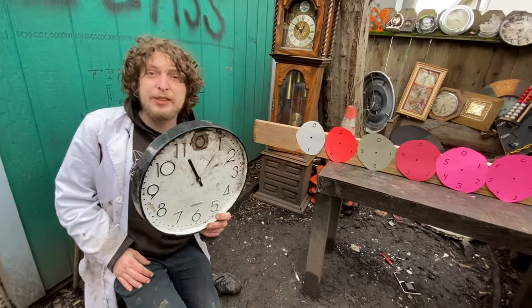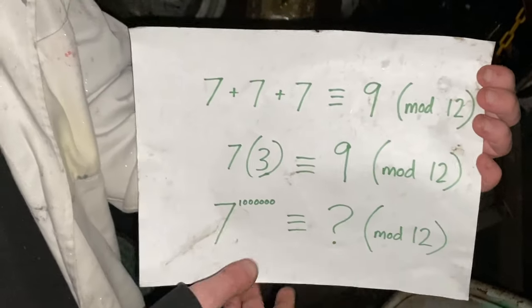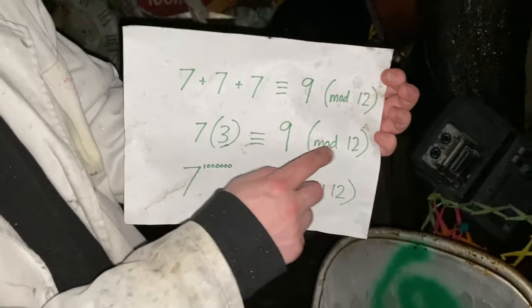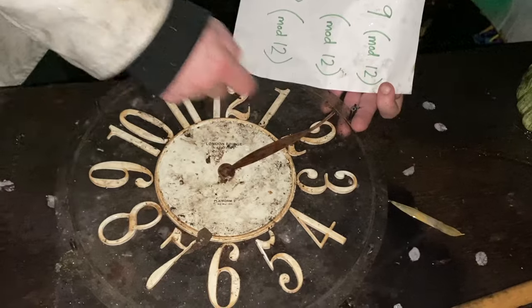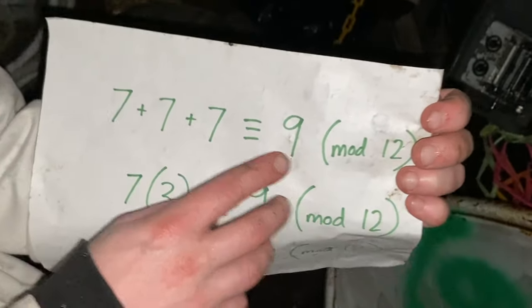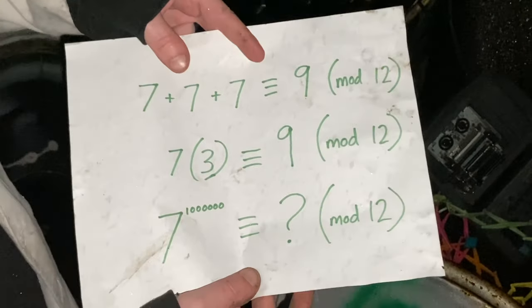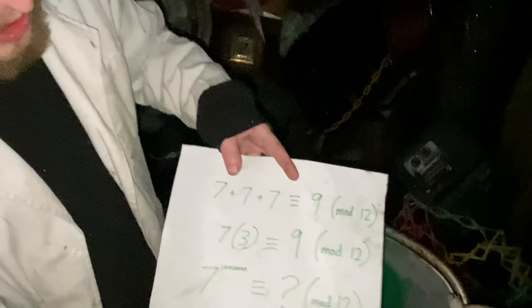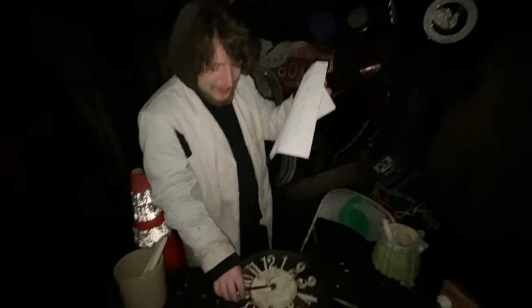Modular arithmetic writes its findings in congruences, which use a triple bar equal sign. If I was on a 12-hour clock — mod 12 — and I added 7 hours 3 different times, I would end up on the number 9, or at least end up 9 numbers later in the cycle from whatever number I had started on. We could also write that as modular multiplication, saying that 7 times 3 is congruent to 9 in mod 12. But what if I wanted to know something like 7 to the 1 millionth power and what that's congruent to on mod 12? Would I have to do like a million different motions with a clock? No — there are shortcuts.